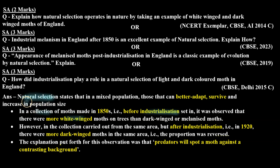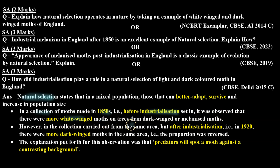Natural selection states that in a mixed population, those that can better adapt survive and increase in population size. In a collection of moths made in the 1850s — that is, before industrialization — it was observed that there were more white winged moths on trees than dark winged or melanized moths. However, in the collection carried out from the same area after industrialization, in 1920, there were more dark winged moths.